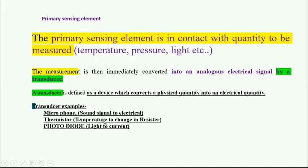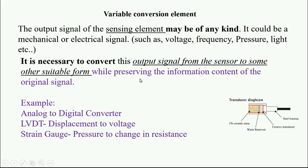The next block is variable conversion element. The output of sensing element may be of any kind - it can be voltage, frequency, pressure, light, etc. That will be the sensing element output.